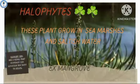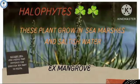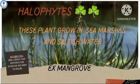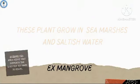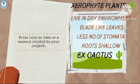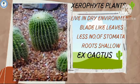Third are halophyte plants. These plants grow in seas, marshes, and saltish water. Example: mangrove.